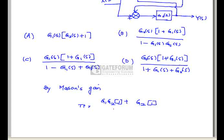In the second case, delta 2 equals 1 minus - first non-touching loop is G1 G2. There are no other loops.